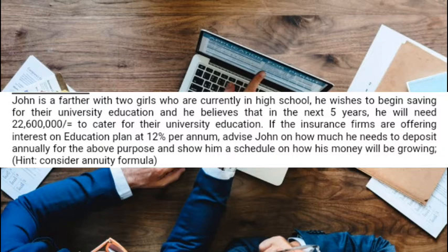John is a father with two girls who are currently in high school. He wishes to begin saving for their university education, and he believes that in the next five years he will need 22 million 600,000 shillings for their university education. The insurance firms are offering an interest on an education planner at 12 percent per annum.